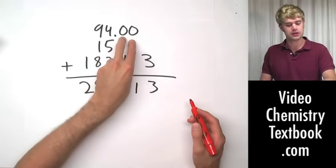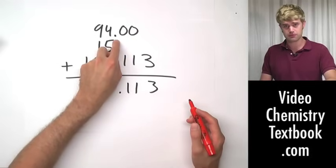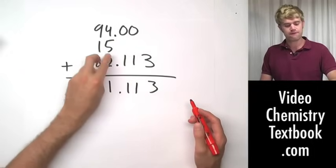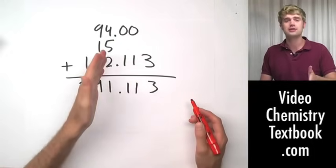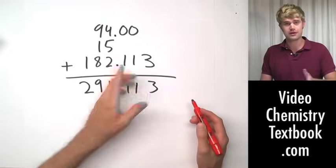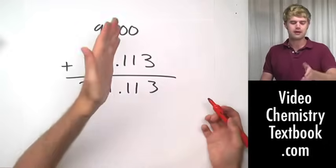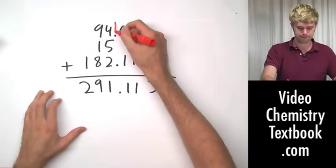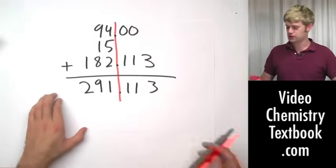Two decimal places here because these zeros to the right of a decimal point are always significant. 15 here doesn't have any decimal places at all. And this number here has three decimal places. That means that the line that I'm going to draw is going to be just to the side of this 15.